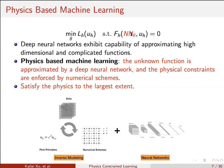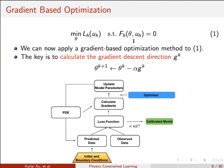Also, the neural network output is differentiable with respect to weights as well as inputs, which gives us a way to compute the gradients of the neural network. Because we formulate the inverse modeling problem as a PDE-constrained optimization problem, we can apply any optimization tactic. In this talk, I will focus on a gradient-based optimization method, where the key is to calculate the gradient descent direction G_k.